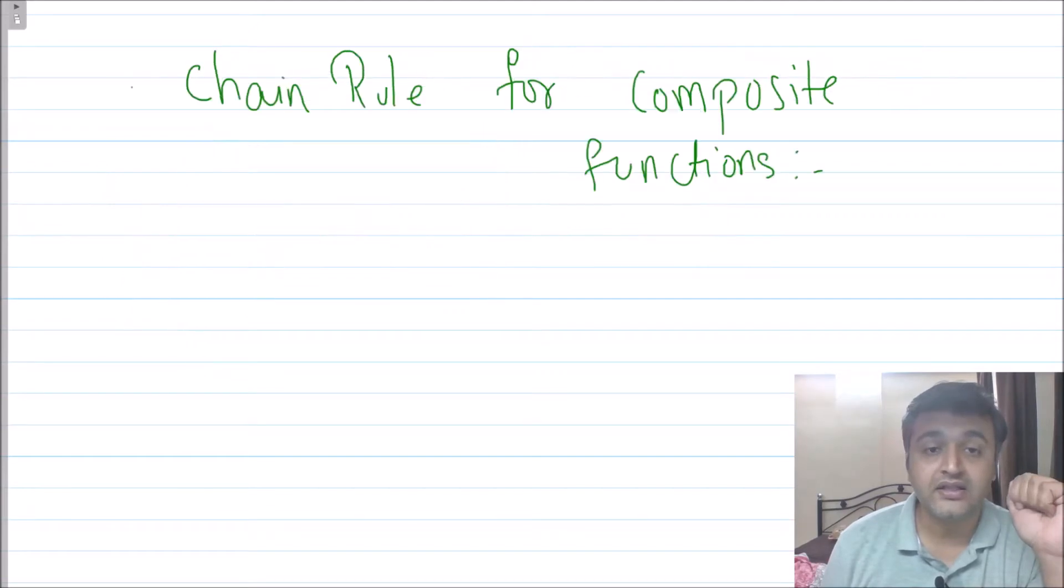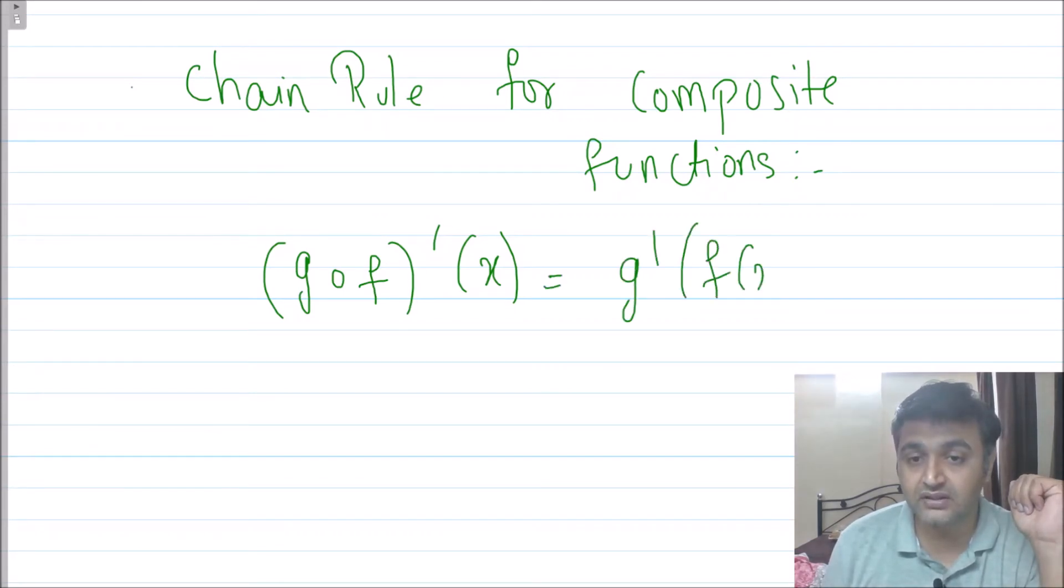The third thing is the chain rule for the composition of functions. What is g compose f derivative? See, g compose f derivative is nothing but the derivative of g times the derivative of f. This is what the chain rule is. Once you know these three things, the problem is pretty much simpler.